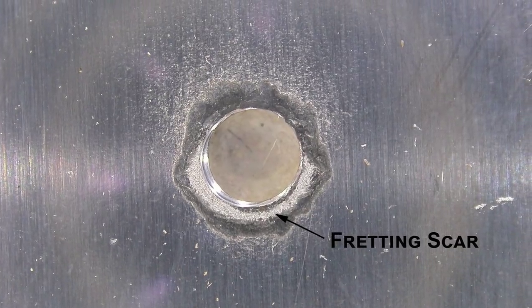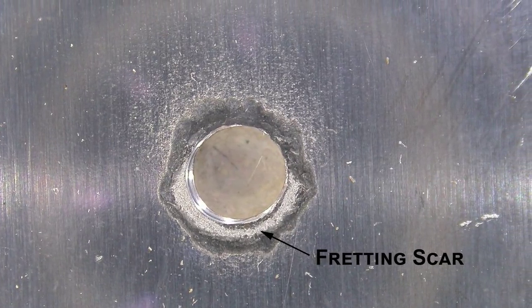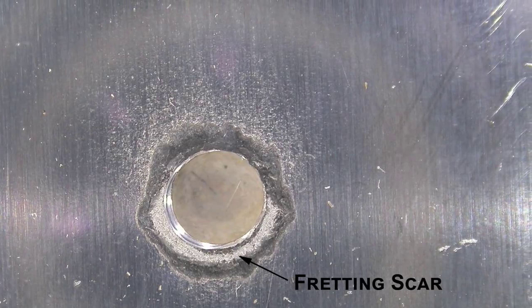What is also important to consider with respect to fatigue of mechanically fastened joints is the role of friction and secondary bending. Both of these phenomena can greatly accelerate crack nucleation. Friction within a mechanically fastened joint is not perfect. Frictional slip between the surfaces can occur, resulting in rubbing between the joint sheets. This repetitive rubbing can cause wear damage known as fretting, generating a scar on the mating surfaces of a joint.